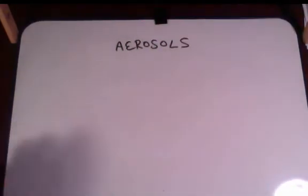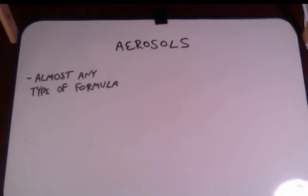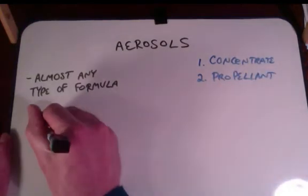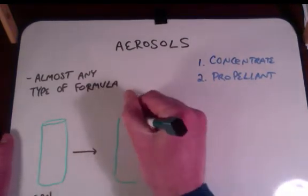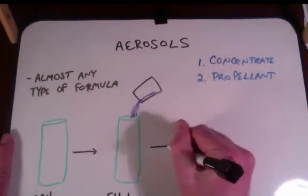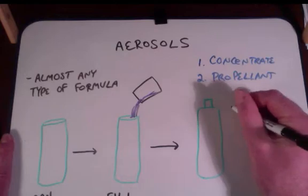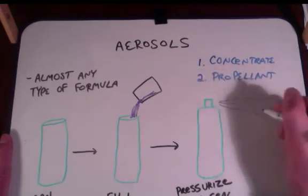The last product form is aerosols. Aerosols are more of a packaging product form than a specific formulation type. In fact, you could actually create an aerosol out of almost any cosmetic formulation if you have the right can, the propellant, and the nozzle setup. Aerosols are cosmetics delivered from a pressurized can, composed of a concentrate and a propellant. You first make the formula as you would any other cosmetic, then fill it into the can, seal it, and pressurize it using an appropriate propellant. VOC — Volatile Organic Compound — regulations have really reduced the use of aerosols in cosmetic products, but you still find them in sunscreens and antiperspirant sprays.